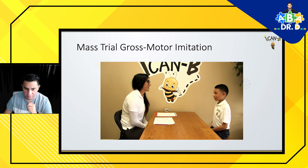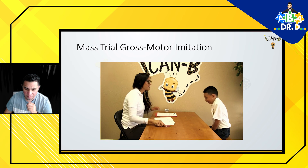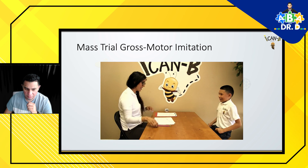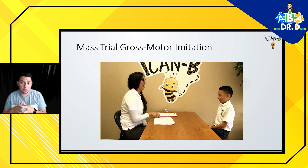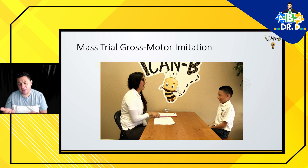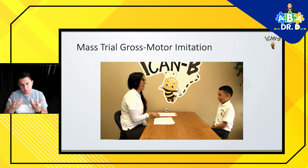Again, look at me. Do this. Look at you doing two high fives — you're so good. Those basically are examples of mass trial. They're very straightforward and a good way to get an idea of what mass trial is. You may have situations where the child gets an incorrect response, and that's where you would have to implement your error correction procedure, which we'll have a video on as part of this series.